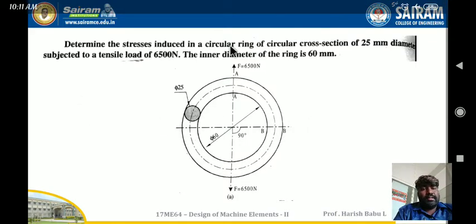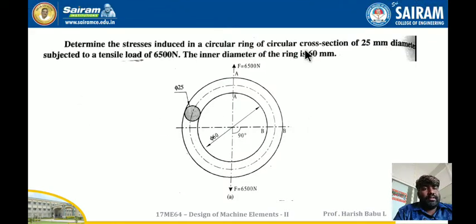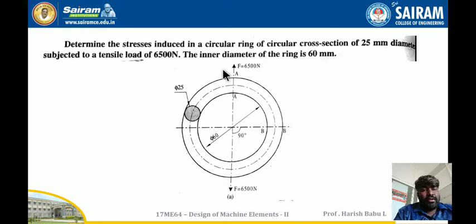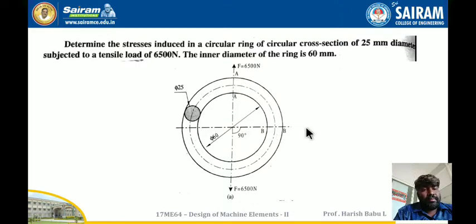Determine the stresses induced in a circular ring of circular cross-section of 25 mm diameter, subjected to a tensile load of 6500 Newton. The inner diameter of the ring is 60 mm. This is a closed ring, so the cross-section is 25 mm. Find the stresses at cross-section AA and cross-section BB — one at zero degrees and another at 90 degrees from the reference cross-section.